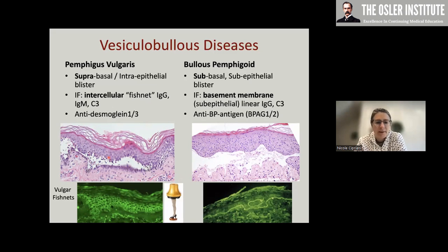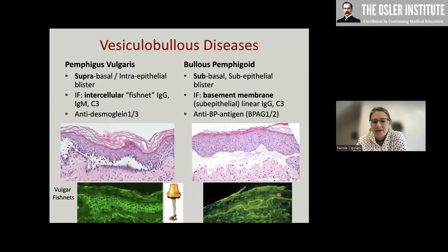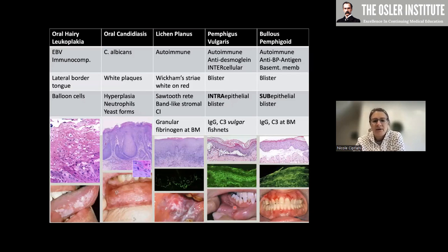Other oral lesions where immunofluorescence is helpful include pemphigus vulgaris and bullous pemphigoid. Depending on where the antigen lies — whether in the desmosomes or at the basement membrane — the blister forms at a different site: either intraepithelial/sub-basal or subepithelial. You'll see a fishnet-like pattern in pemphigus vulgaris and a linear pattern in bullous pemphigoid. A comparison chart of all of these is included for those who like charts.